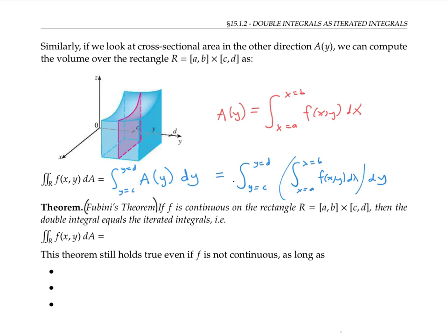This result is known as Fubini's theorem, which says that if f is continuous on this rectangle, then the double integral, then the double integral defined in terms of the Riemann sum is equal to the iterated integrals. In other words, this double integral can be written as the integral with respect to x of the integral with respect to y of our function, or it can be written as the integral with respect to y of the integral with respect to x of our function. In fact, this theorem still holds even if f is not continuous on the whole rectangle.